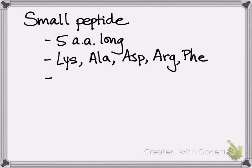You take a sample of the small peptide and you do one round of Edman degradation, and you get an alanine derivative.